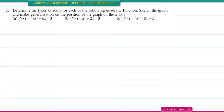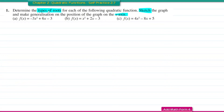Question number 1: determine the type of roots for each of the following quadratic functions. Sketch the graph and make generalizations on the position of the graph on the axis. To determine the type of roots, we're going to find the value of the discriminants for each of the functions.